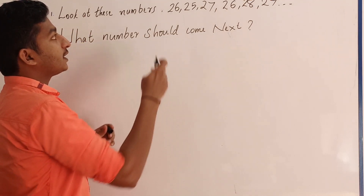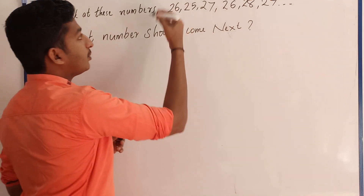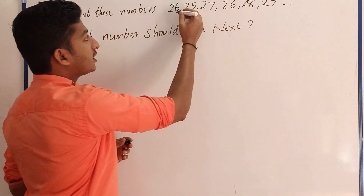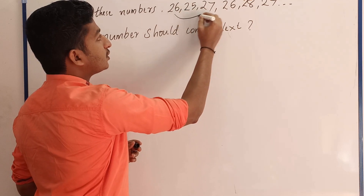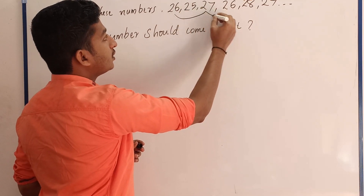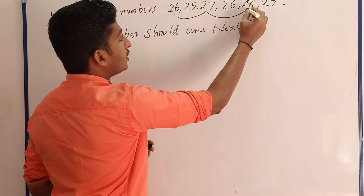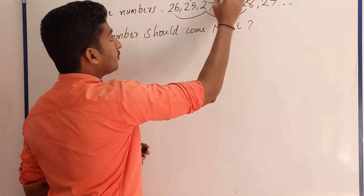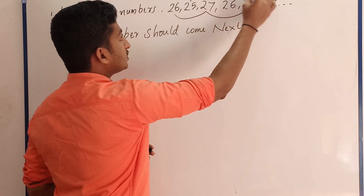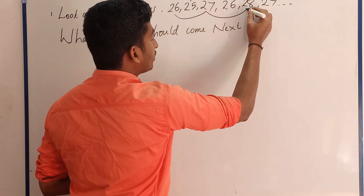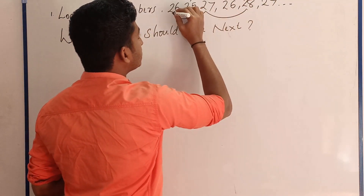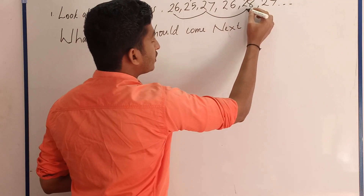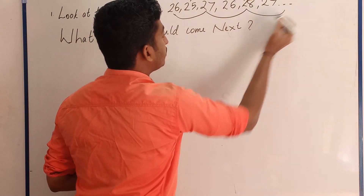You can observe the pattern. The numbers go 26, 27, 28 and 25, 26, 27. The next in the pattern would continue with 26, 27, 28, 28.